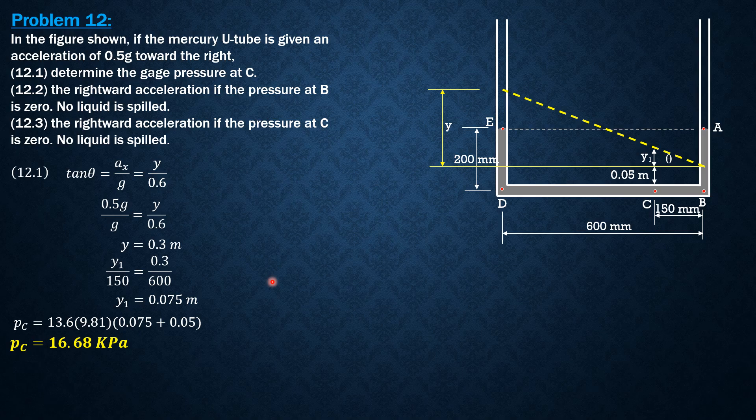We then proceed to the second, the rightward acceleration if the pressure at B is 0. Meaning to say, for the pressure at B to be 0, the imaginary surface should cross B. A will totally lower up to B. This is 0.2 meter or 200 mm. E will rise also by 0.2 or 200 mm. The total distance from vertical distance from B to this surface here would be 0.4.